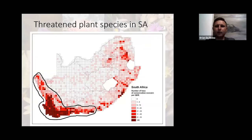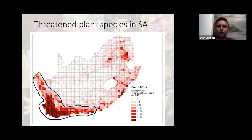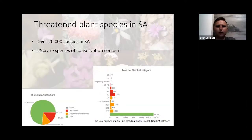Now onto the threatened species. A map from SANBI shows a clear pattern where a large proportion of our threatened species fall within the Cape Flora region, with a few exceptions in the Pondoland area, the escarpment in Mpumalanga, and one or two spots in Gauteng and Limpopo. We have over 20,000 plant species in South Africa, of which 25% are species of conservation concern, meaning they're either threatened with extinction or are naturally rare.